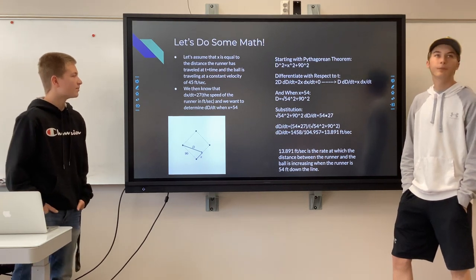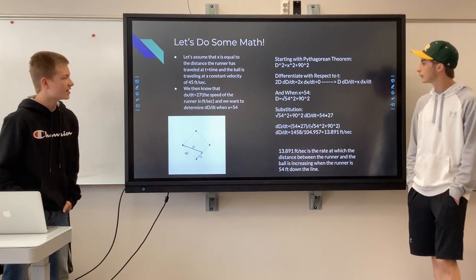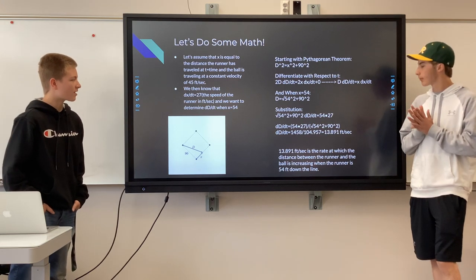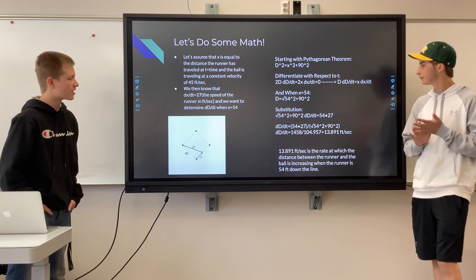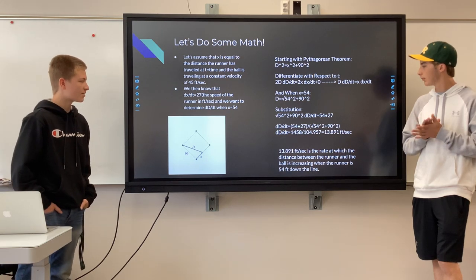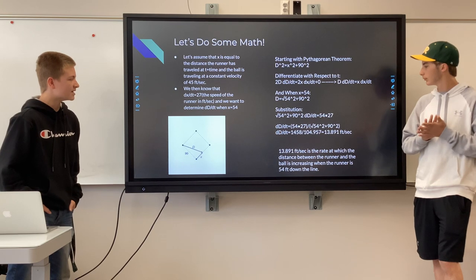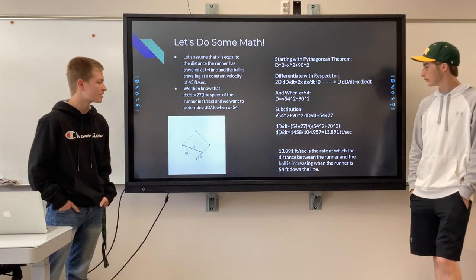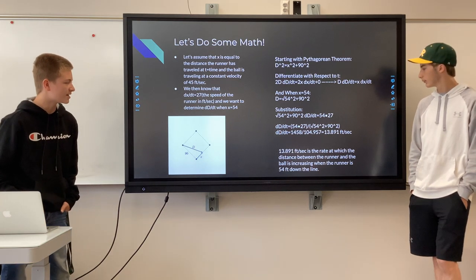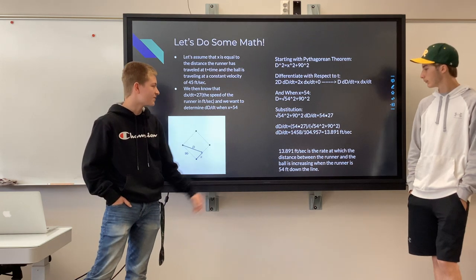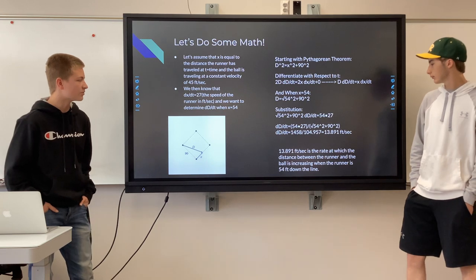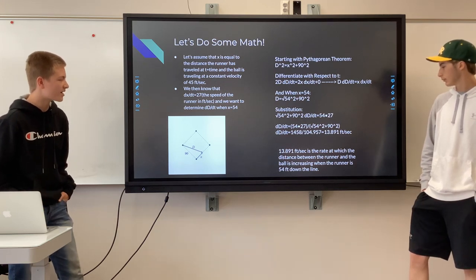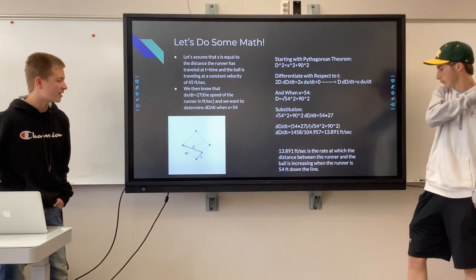We start with the Pythagorean theorem, which gives d² = x² + 90². We differentiate with respect to t, and when x equals 54, d equals the square root of 54² plus 90². Substituting in, dd/dt equals (54 times 27) divided by the square root of 54² plus 90², which gives us 1,458 divided by 104.957, equaling about 13.891 feet per second.